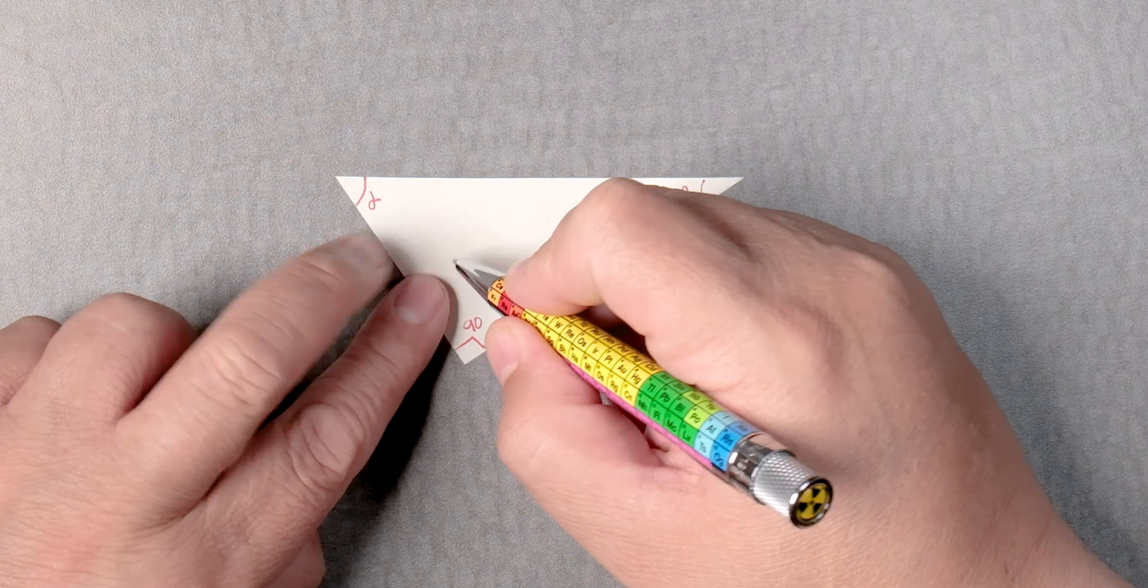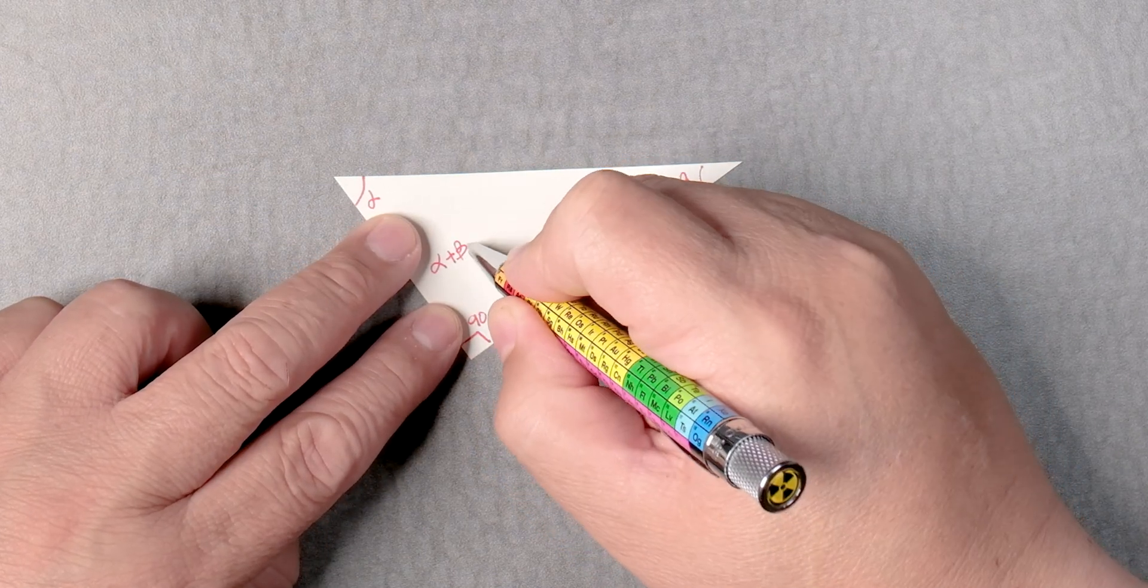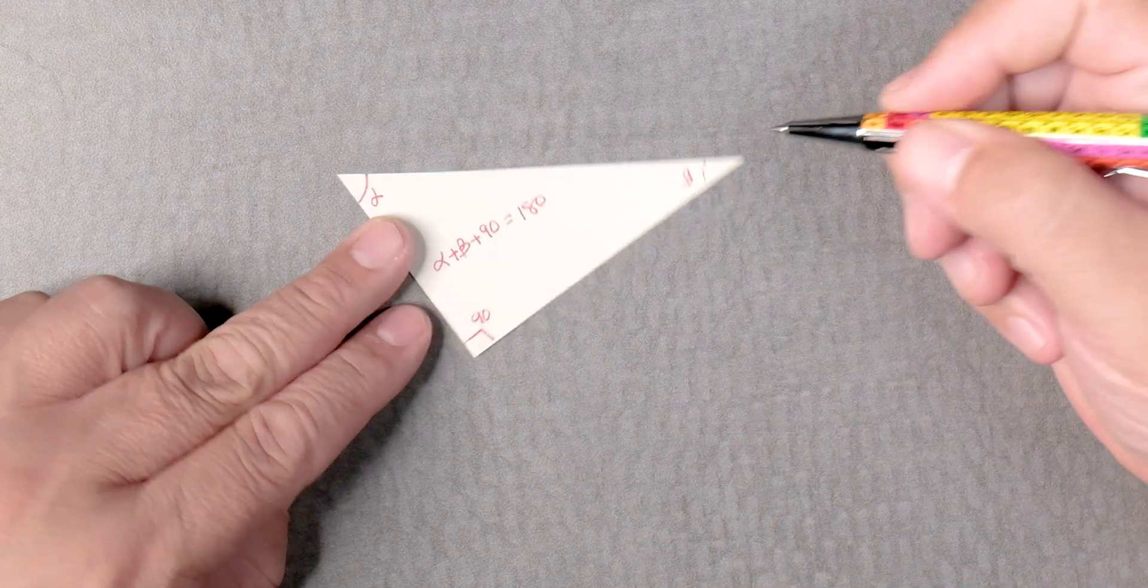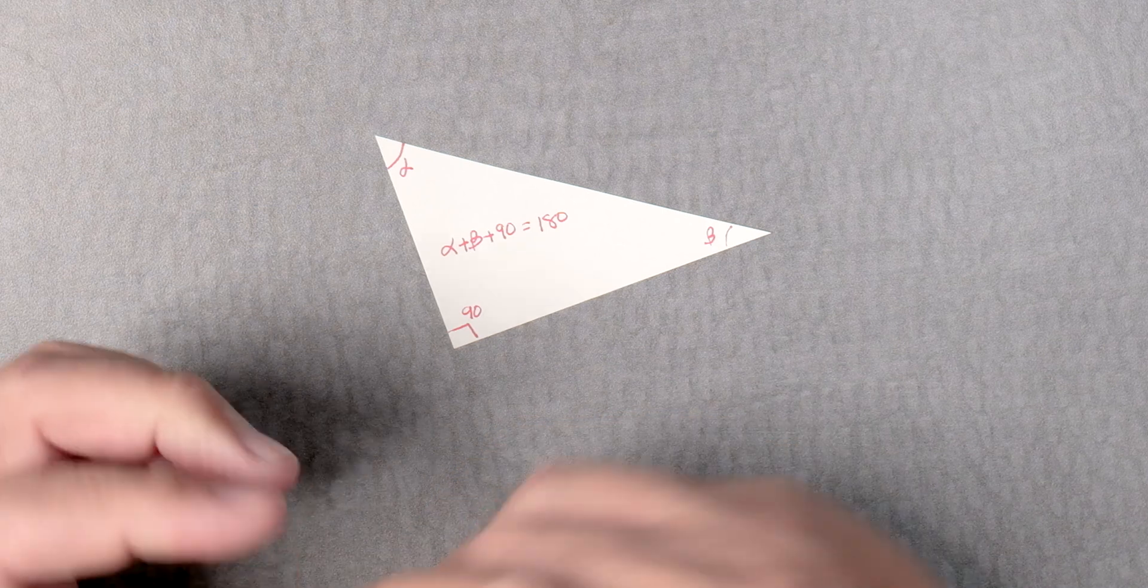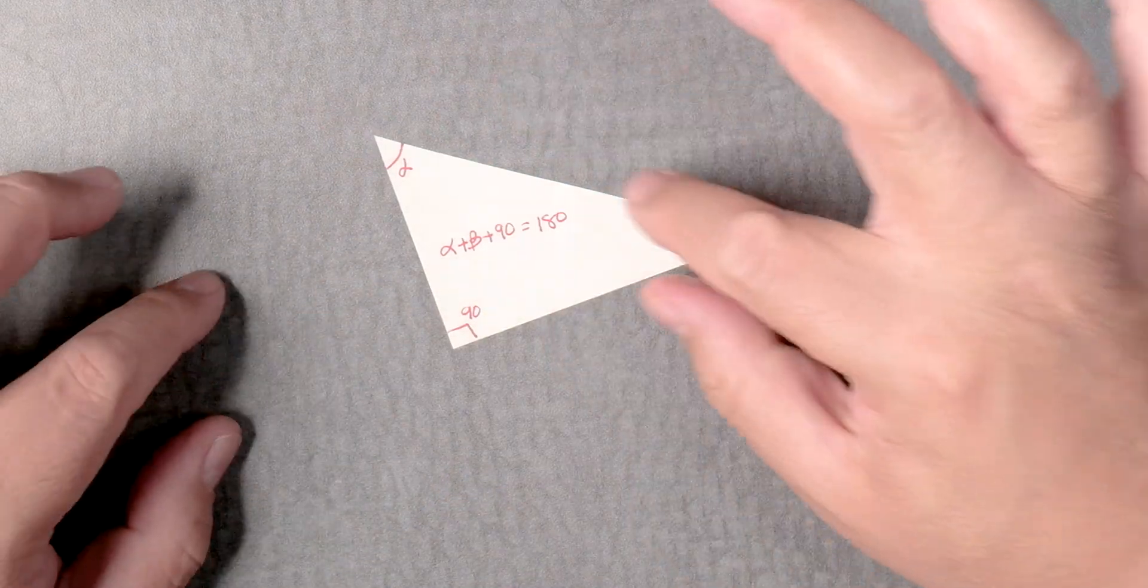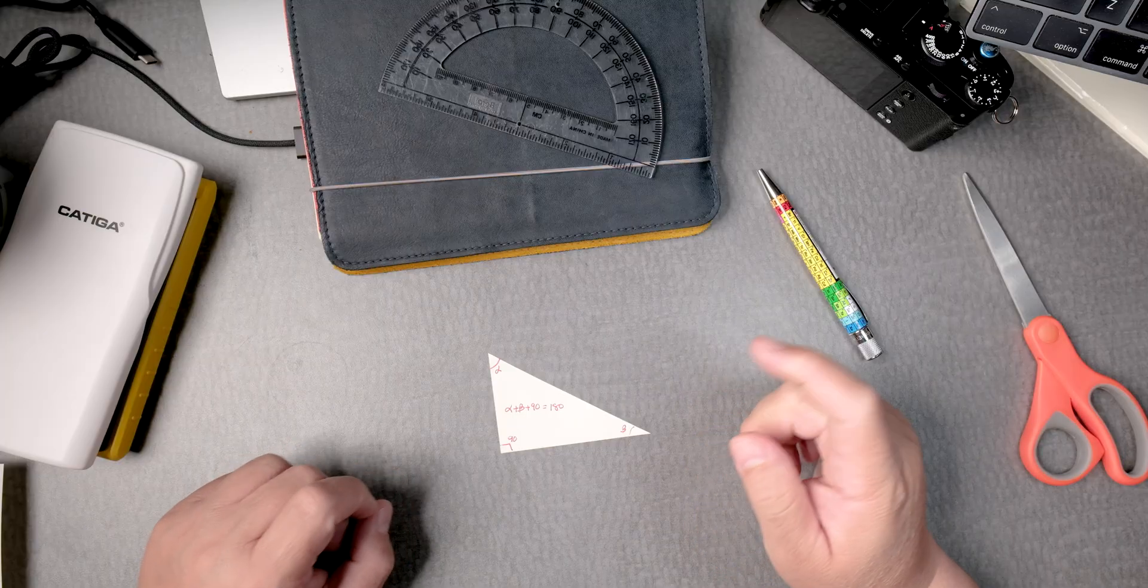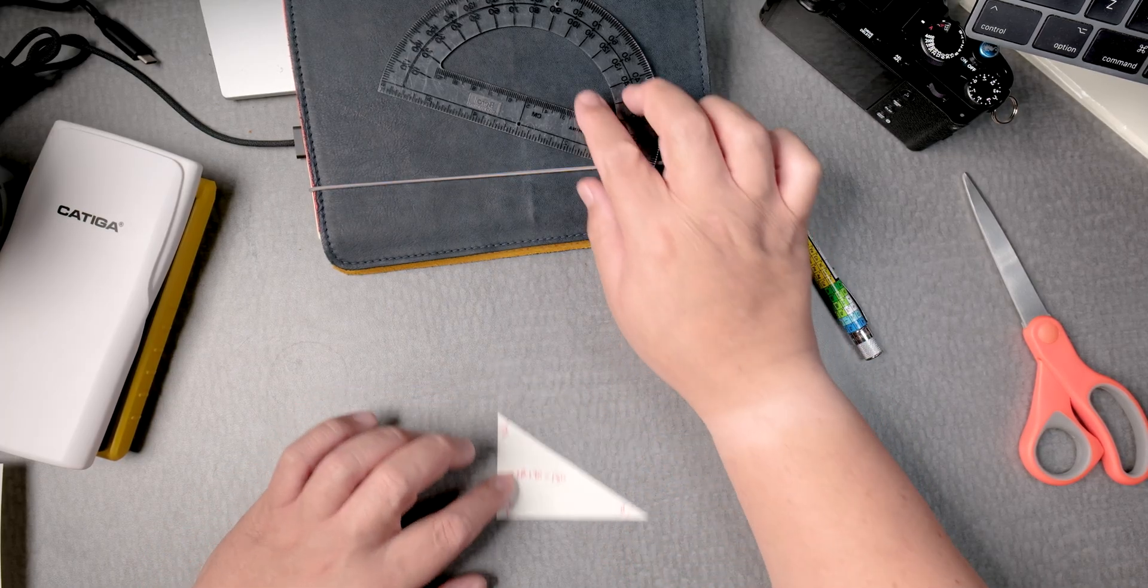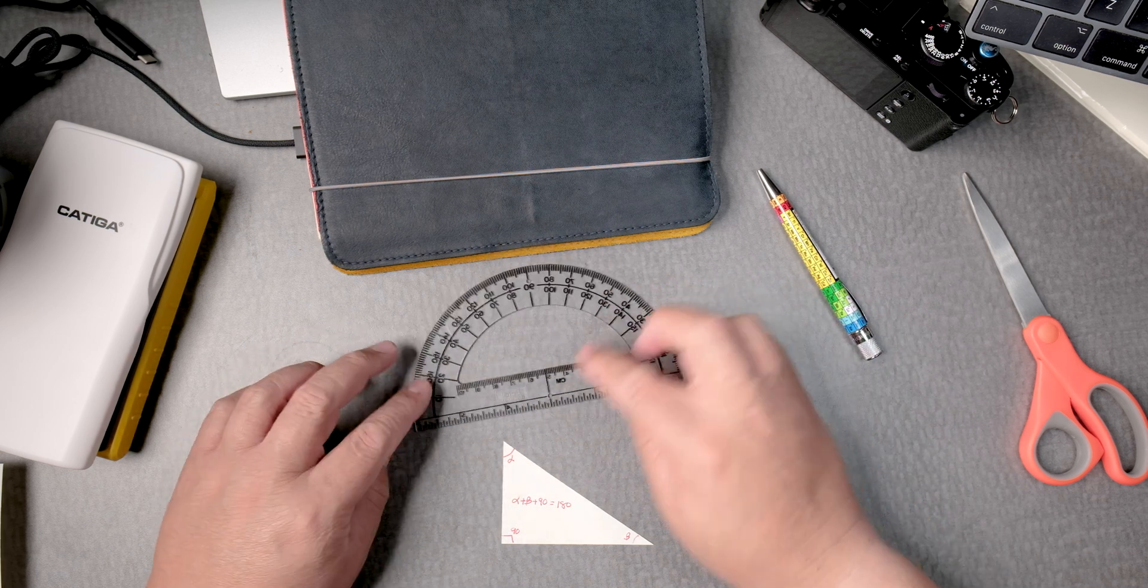Now, I do know that alpha plus beta plus 90 equals 180 degrees. All triangles have... All triangles that you make, a polygon have... Well, this particular polygon has 180 degrees. 180 degrees is a straight line.